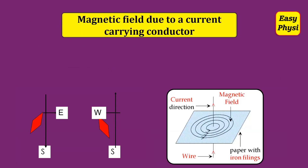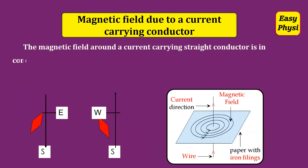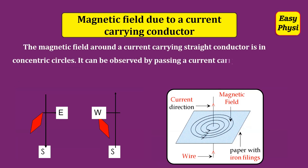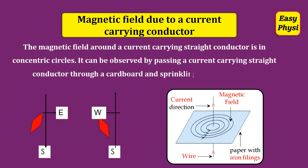Magnetic Field Due to a Current-Carrying Conductor: The magnetic field around a current-carrying straight conductor is in concentric circles. It can be observed by passing a current-carrying straight conductor through a cardboard and sprinkling iron filings on it.